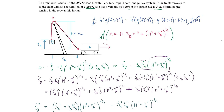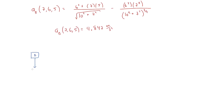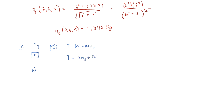Since our goal is to find the tension force in the rope, we examine the free body diagram of B. Body B has a downward weight force and an upward tension force. Taking upward as positive and applying Newton's second law: T − W = m·aB, so T = m·aB + W. Plugging in the mass of 200 kg, aB = 4.847 m/s², and g = 9.81 m/s², the tension force equals 2.931 kilonewtons.